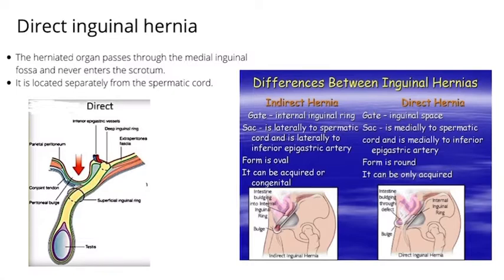Looking at the differences between indirect and direct inguinal hernias: the gate of the indirect hernia is located in the internal inguinal ring, while the gate of the direct hernia is in the inguinal space. The sac of the indirect hernia is lateral to the spermatic cord and lateral to the inferior epigastric artery; the sac of the direct hernia is medial to the spermatic cord and medial to the inferior epigastric artery. The form of the indirect hernia is oval and the form of the direct hernia is round. Indirect hernia can be acquired or congenital, while direct hernia can only be acquired.